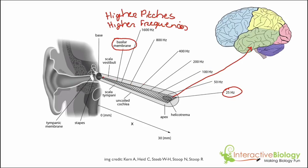If the signal is coming from the thinner region and going to the brain, that tells the brain it's coming from a region associated with a higher frequency, and the brain interprets that as a higher pitch. So there is a direct relationship between where the membrane vibrates and where in the brain is being stimulated. Depending on where the signal comes from, the brain can distinguish between the different pitches.